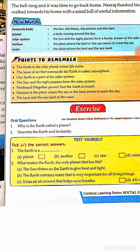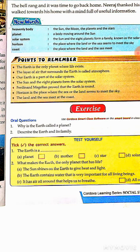Now, the points to remember: The Earth is the only planet where life exists. The layer of air that surrounds the Earth is called the atmosphere. Our Earth is a part of the solar system. Magellan proved that the Earth is round. Horizon is the place where the land or the sea seems to meet the sky. The land and the sea meet at the coast.